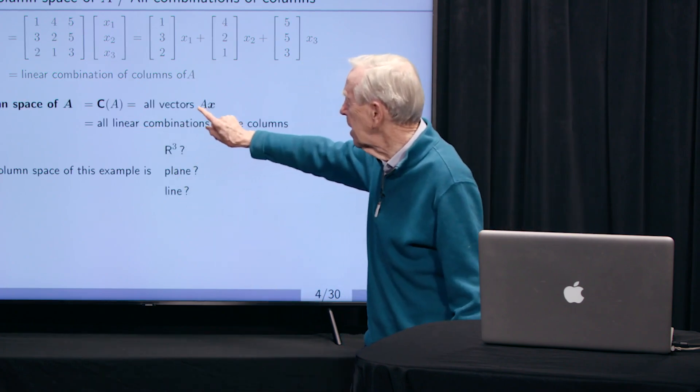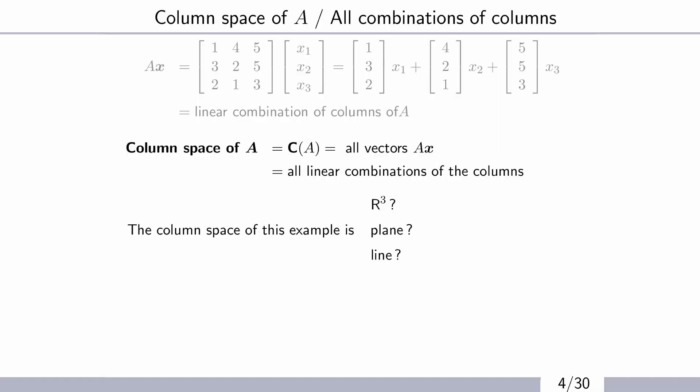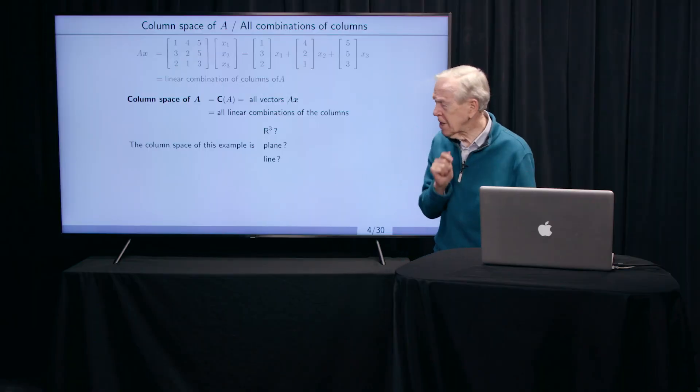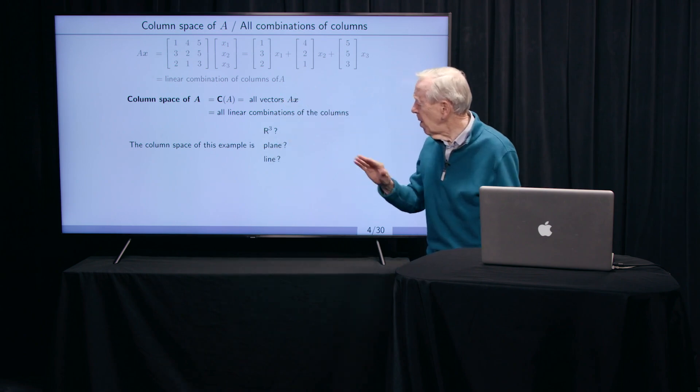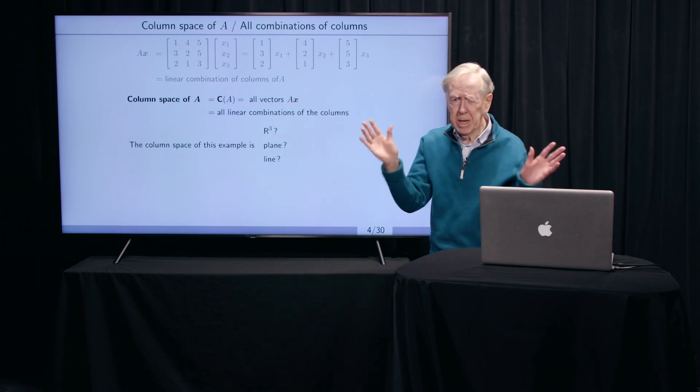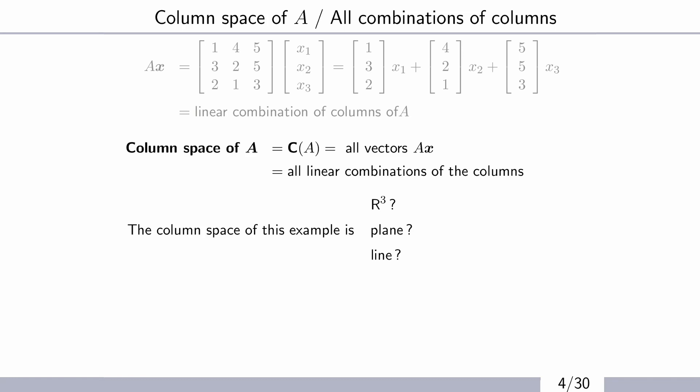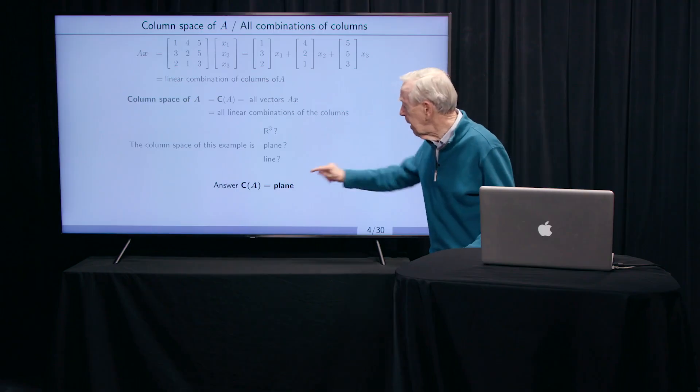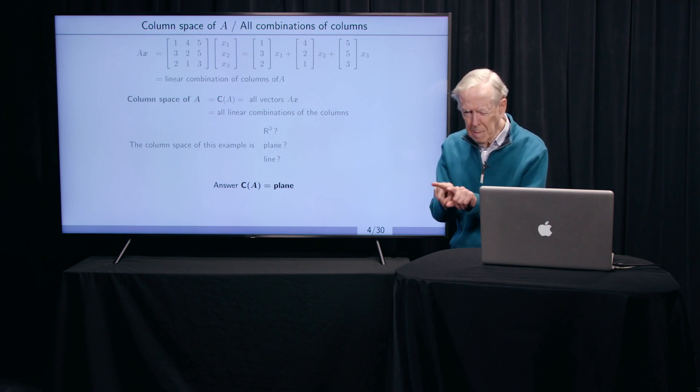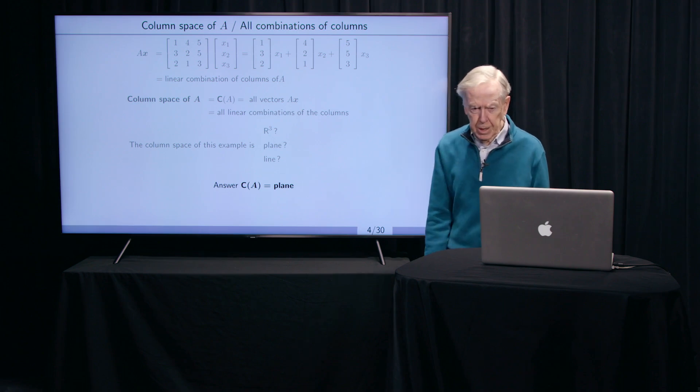So that's that word column space. And I use the capital C for that. And it's all the vectors I can get that way, all the combinations of the columns. And now I ask, is the column space, all the combinations, is it the whole 3D space, which everybody calls R3, for real three? Or is it a plane? Or is it just a line? The answer is plane. That's a good thing about this subject. The answer is a plane, because I have two different lines that meet at 0. And when I fill in between them, I have a flat plane. I don't go in the third direction.